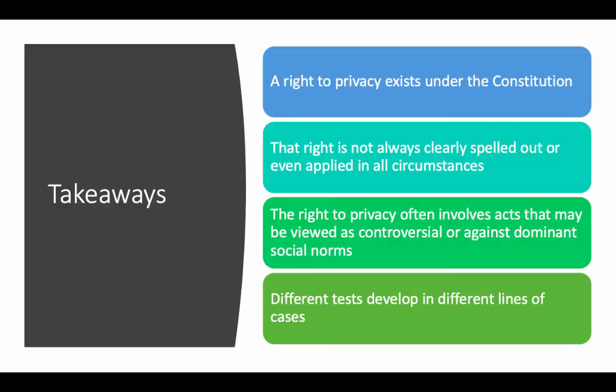Takeaways: One, a right to privacy exists under the Constitution. Two, we don't know what that right is in all circumstances because it's not clearly spelled out and it's not applied evenly. The right to privacy often involves acts that may be viewed as controversial or against dominant social norms — that's why we get these cases. Different tests develop in different areas; there is no one guiding test for right to privacy cases. And the right to privacy might be subsumed by other legal issues as well, so the framework may not necessarily matter as much in each individual case.